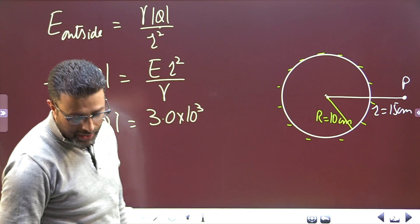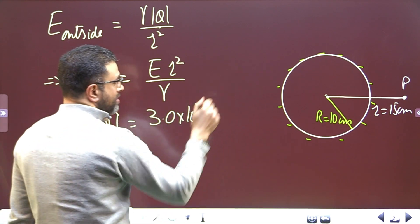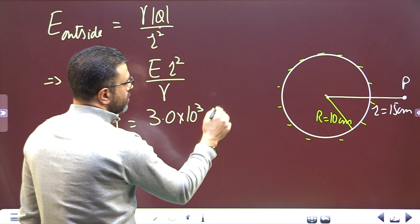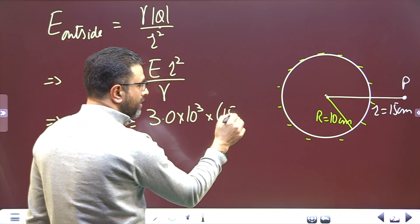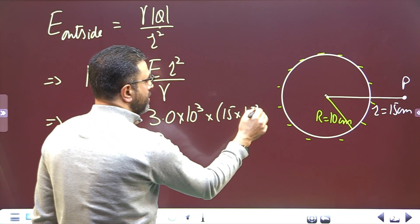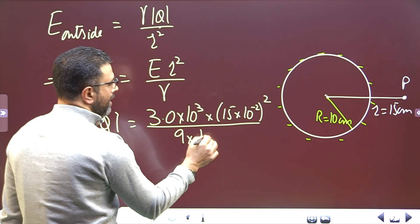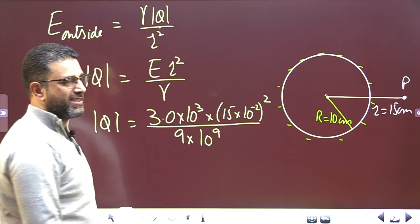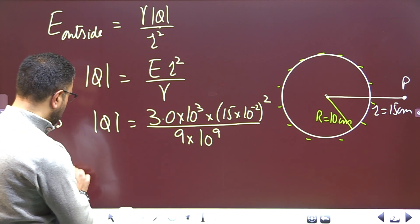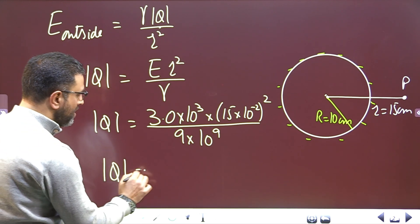It's already in SI system. At a distance of 15 centimeters - we have to convert it to meters: (15×10⁻²)² - divided by gamma. The electrostatic constant is 9×10⁹ in SI system.